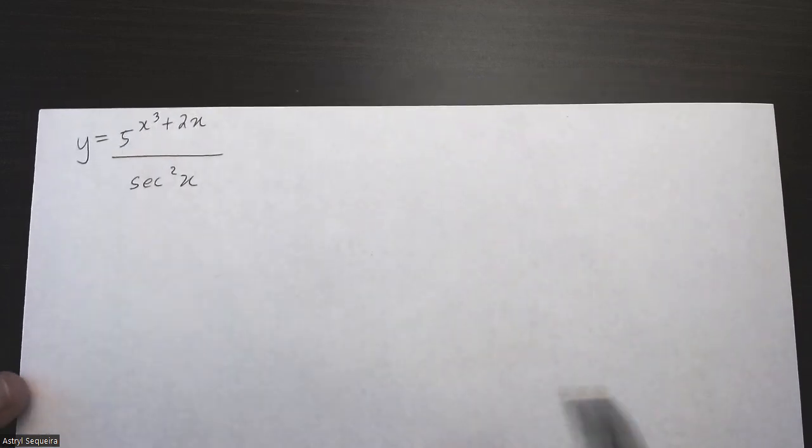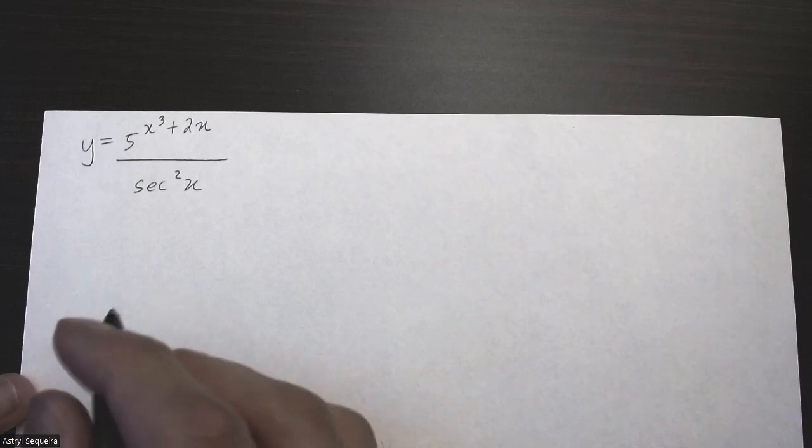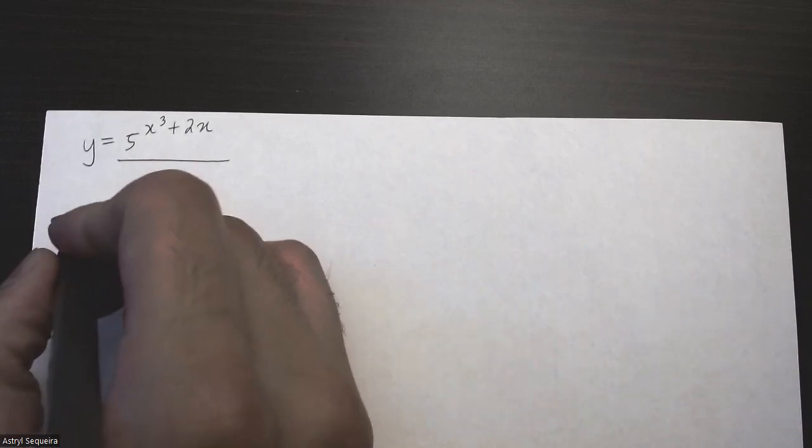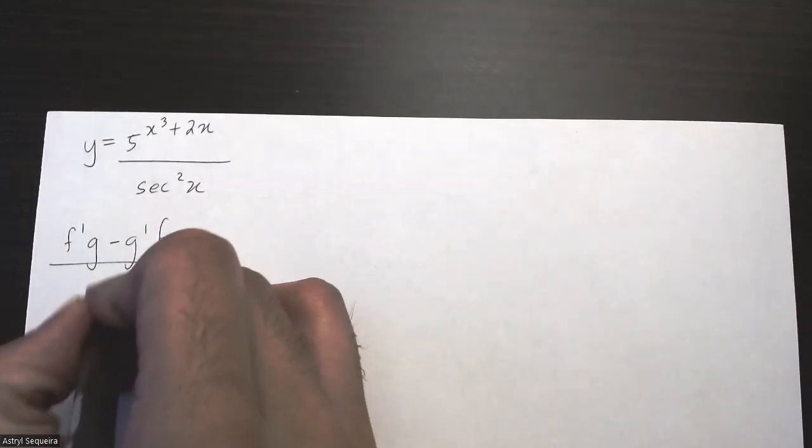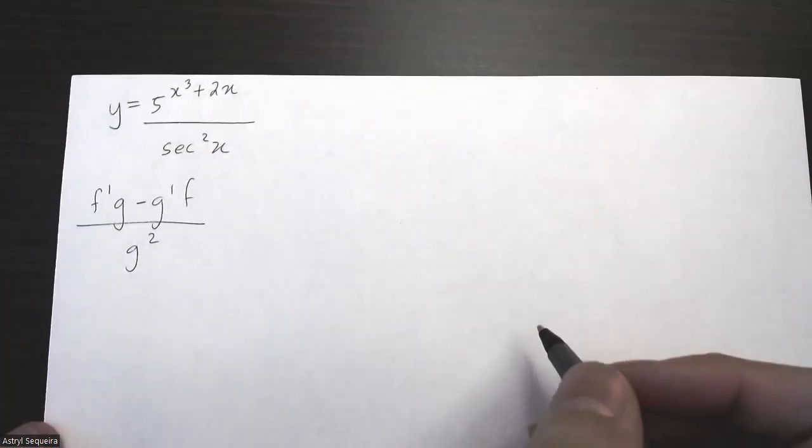Because we have one function divided by another, we're going to use our quotient rule, which is f prime g minus g prime f divided by g squared.